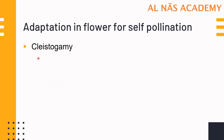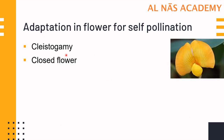The second adaptation is kleistogamy, which means the flower is closed — the sex organs are enclosed within the flower. Here is the example of a brown nut flower. You can see this flower is closed and the male and female organs — the anther and stigma — are enclosed in this bird-like structure. When the pollen are released from the anther, they have no option but to land on the stigma of the same flower, as the flower is closed.